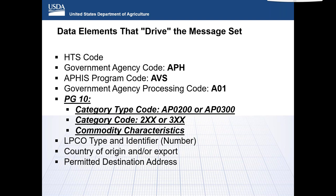APHIS Veterinary Services will still continue to require and issue import permits. All government-to-government certificates will need to continue to be filled out, endorsed, and provided to CBP Agriculture in original paper format. Examples of such certificates include meat certificates, casing certificates, veterinary certificates, health certificates, certificate of veterinary inspection, zoosanitary certificates, and sanitary certificates. All of these certificates, permits, and others are considered LPCO and should be reported in the message set.